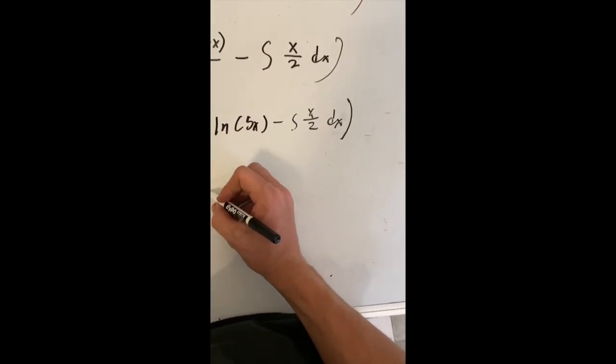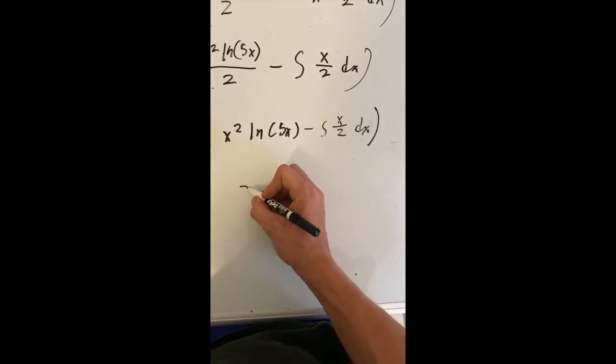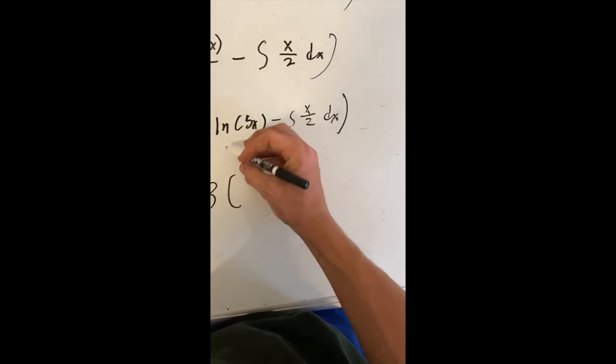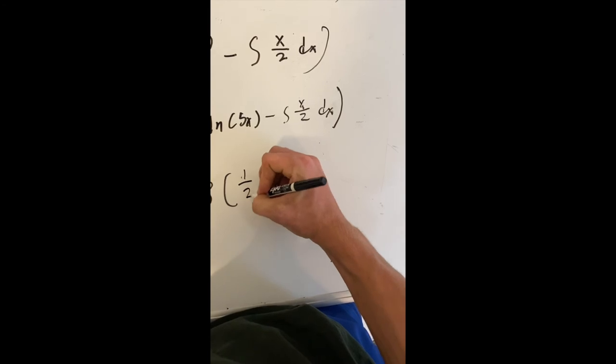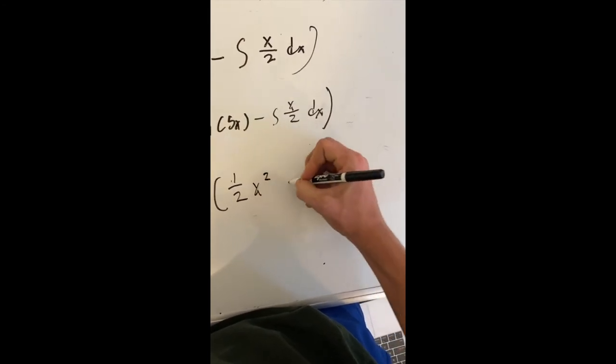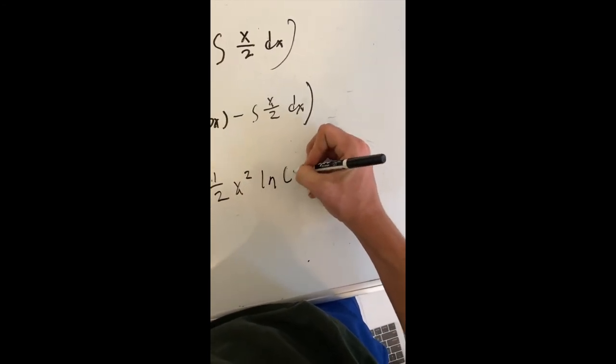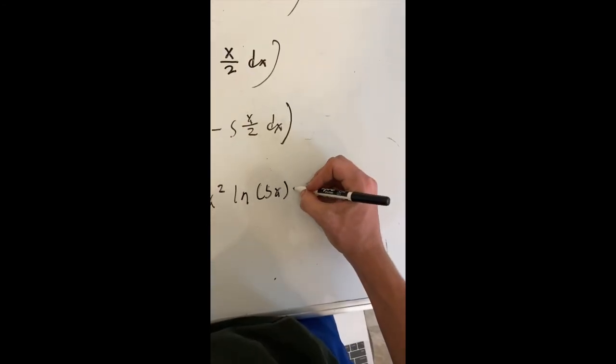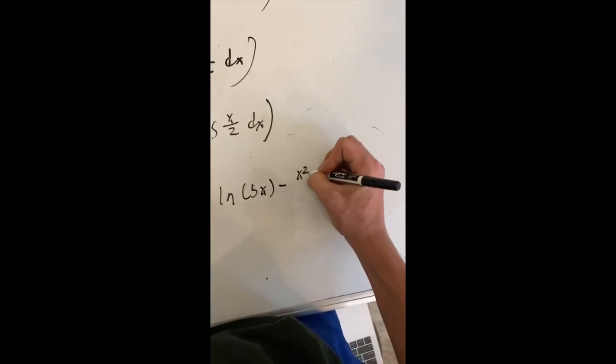So now I'm going to want to put them all in. So, the big thing is going to be 3, bring down my constant of 3, and then we're going to start putting this in. 1 half x squared ln of 5x. And now the part that we just simplified. Subtract x squared divided by 4.